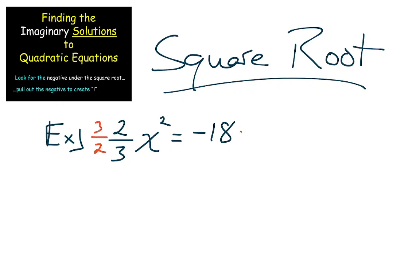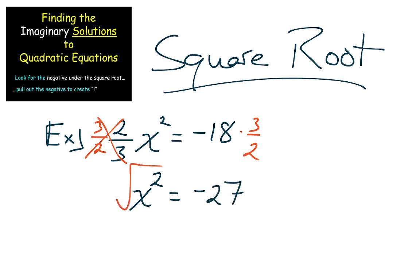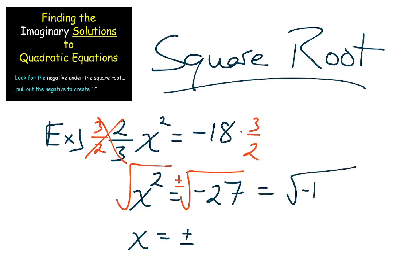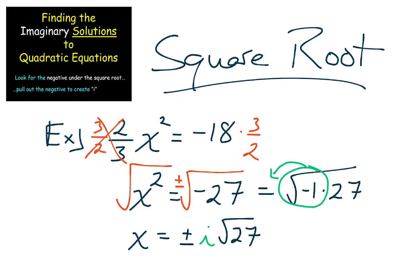Before we take the square root of both sides, we have to get rid of this fraction. Multiply both sides by the reciprocal — the fraction cancels leaving just x squared. Then we figure out negative 18 times three-halves, which equals negative 27. Now it's time to take the square root of both sides. We get the square root of a negative number, and we also get plus or minus — that's pretty important. We're going to rewrite negative 27 as negative 1 times 27. The square root of negative 1 pops out as i.